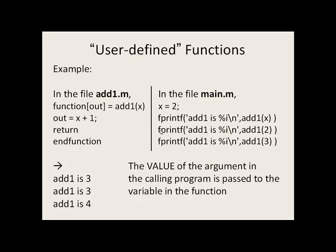We go down to the next line. fprintf add1 is percent i. So now we go over to add1 again. In this case, we don't say x, but we say 2. We're going to pass the value 2 into x in the function. 2 plus 1 gets stored in out, so 3 gets stored in out. Out will be sent back up to the main program here, so add1 is 3 will be printed on the screen again.